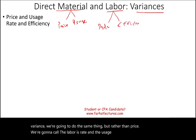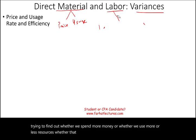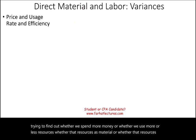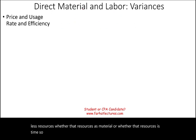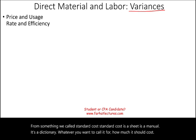Simply put, we are trying to find out whether we spent more money or whether we used more or less resources — whether that resource is material or whether that resource is time. When we say variances or variance analysis, you are varying from something. That's important to remember: you are varying from standard cost.